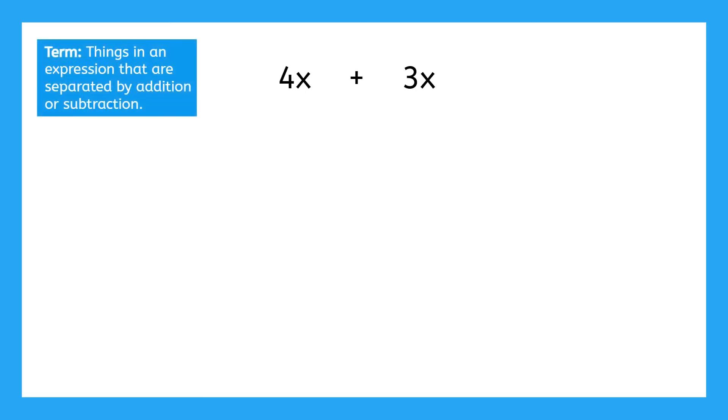Yeah, it's things in an expression that are separated by addition or subtraction. So in this expression, how many terms do we have? Yeah, we have two terms. We have 4x and 3x. Now, how do we know if these terms are like terms?